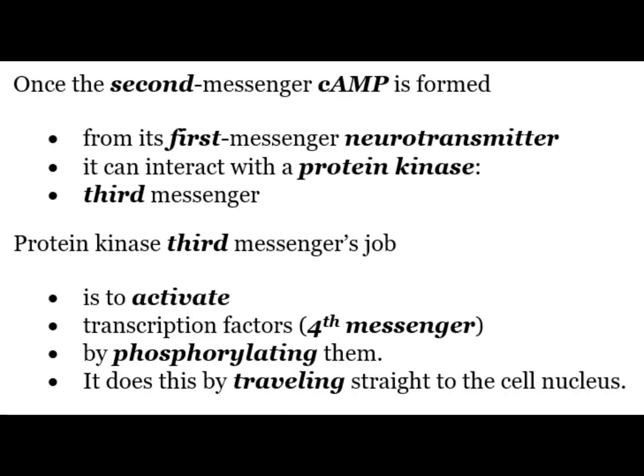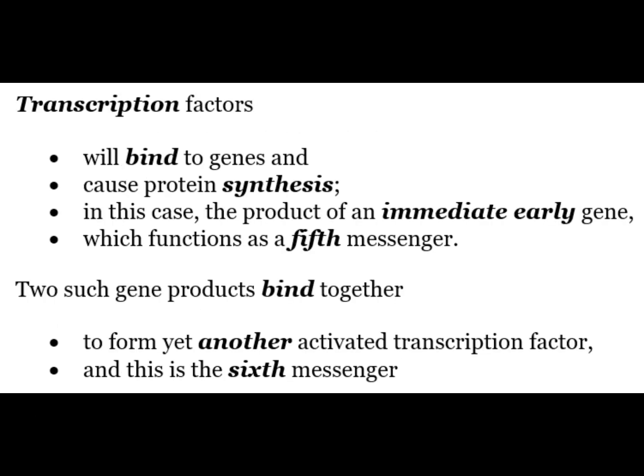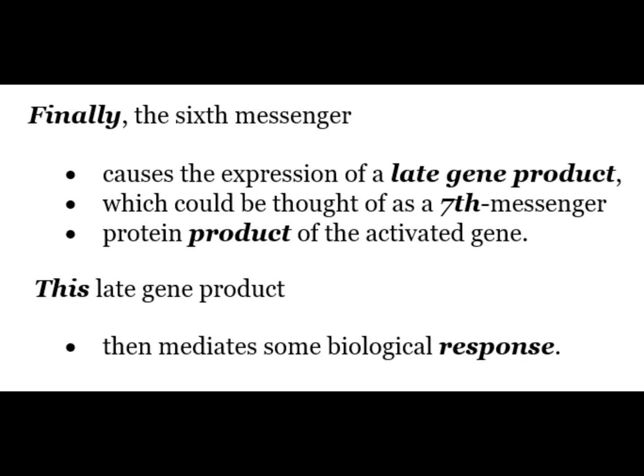In summary, once the second messenger cyclic AMP is formed from its first messenger neurotransmitter, it can interact with protein kinase, the third messenger. The third messenger's job is to activate transcription factors, the fourth messenger, by phosphorylating them, traveling straight to the cell nucleus. Transcription factors bind to genes and cause protein synthesis — in this case the product of an immediate early gene, the fifth messenger. Two such gene products bind together to form yet another activated transcription factor, the sixth messenger. Finally, the sixth messenger causes the expression of a late gene product, the seventh messenger protein, which mediates some biological response.